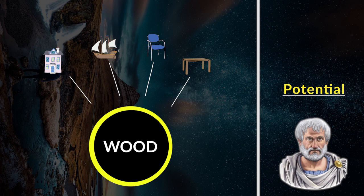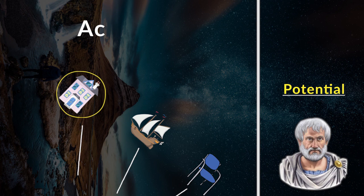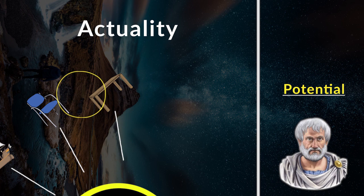But a house does not have nearly as much potential as wood, because it already has the actuality of a house. A ship is already a ship, a chair is a chair, and a table is a table. The same material of wood can be actualized in many ways.